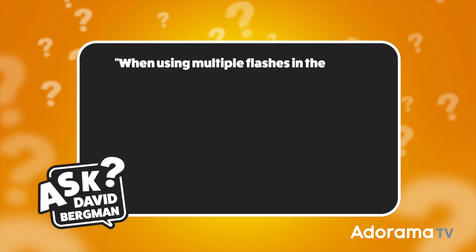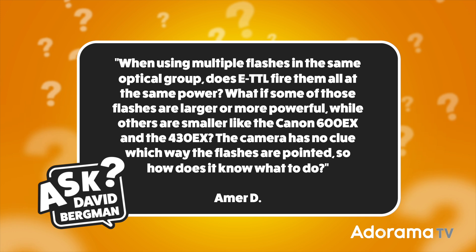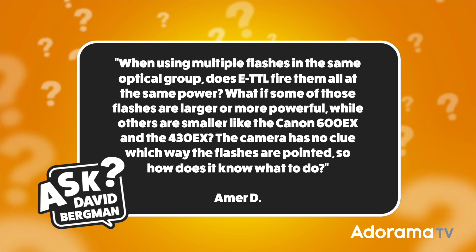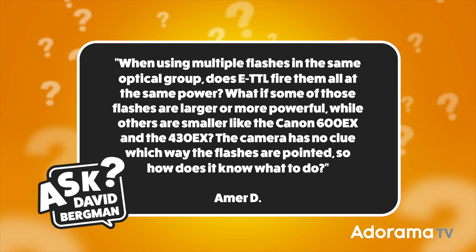Today's question was sent in by Amer D. When using multiple flashes in the same optical group, does eTTL fire them all at the same power? What if some of those flashes are larger or more powerful while others are smaller, like the Canon 600EX and the 430EX? The camera has no clue which way the flashes are pointed, so how does it know what to do? What I'm going to do is talk about TTL — first how it works with one flash, and then get into multiples.